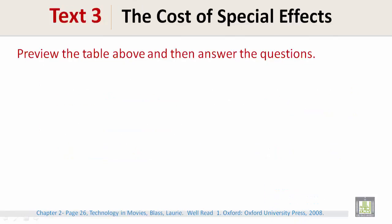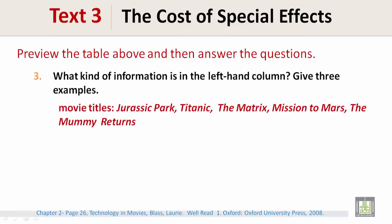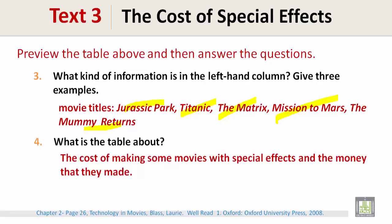Preview the table above and then answer the questions. What kind of information is in the left-hand column? Give three examples. You will have movie titles such as Jurassic Park, Titanic, The Matrix, Mission to Mars, and The Mummy Returns. What is the table about? The cost of making some movies with special effects, and the money that they made.